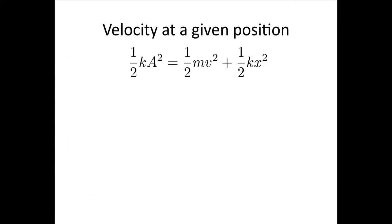Now we can use this to work out the velocity given the position. We've got that the total energy is 1/2 kA squared, and that's equal to the kinetic energy, 1/2 mv squared, plus the potential energy, 1/2 kx squared.